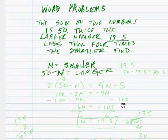So, twice the larger number: 2 times (50 minus n) equals 4 times the smaller minus 5. 5 is 5 less, so 4n minus 5.